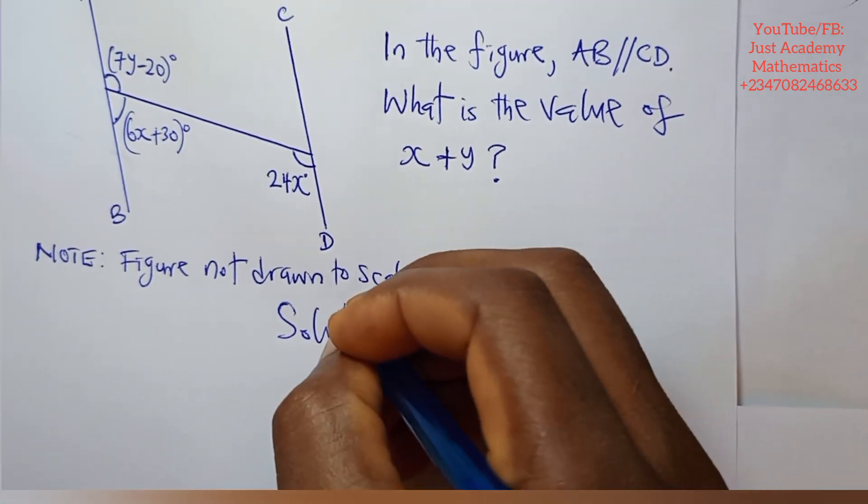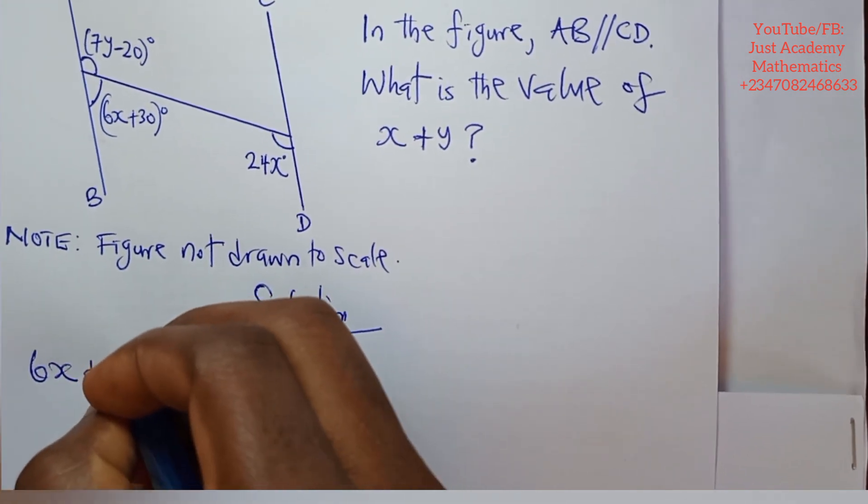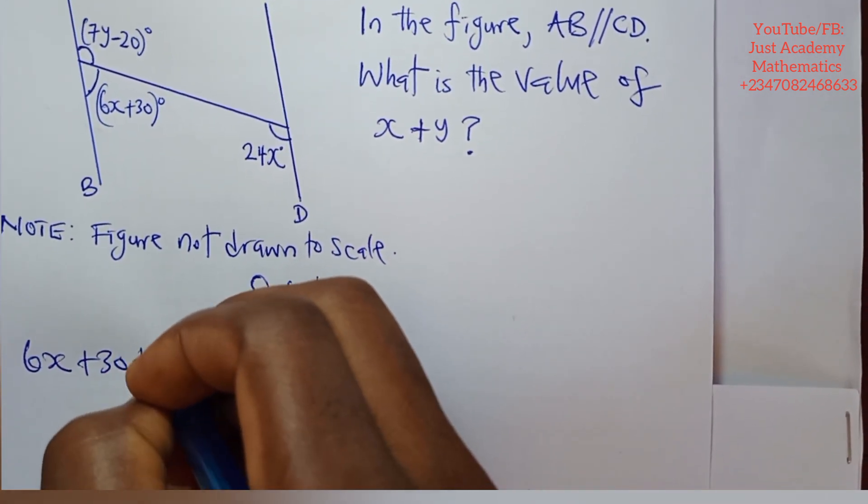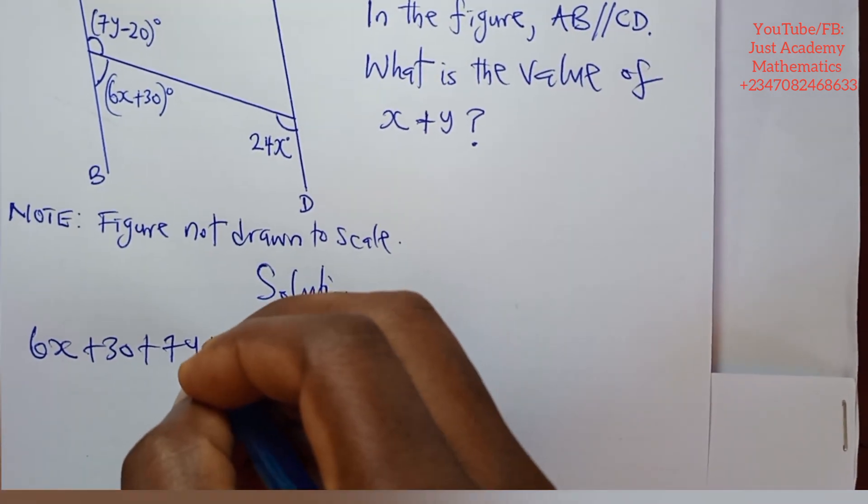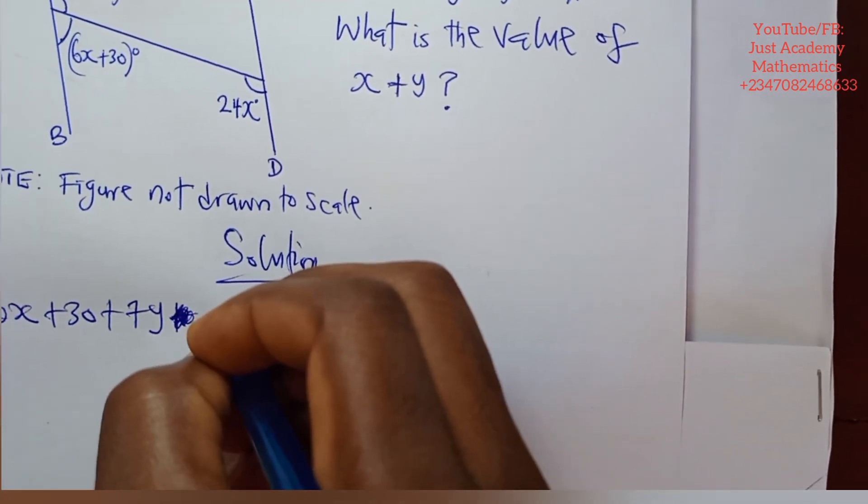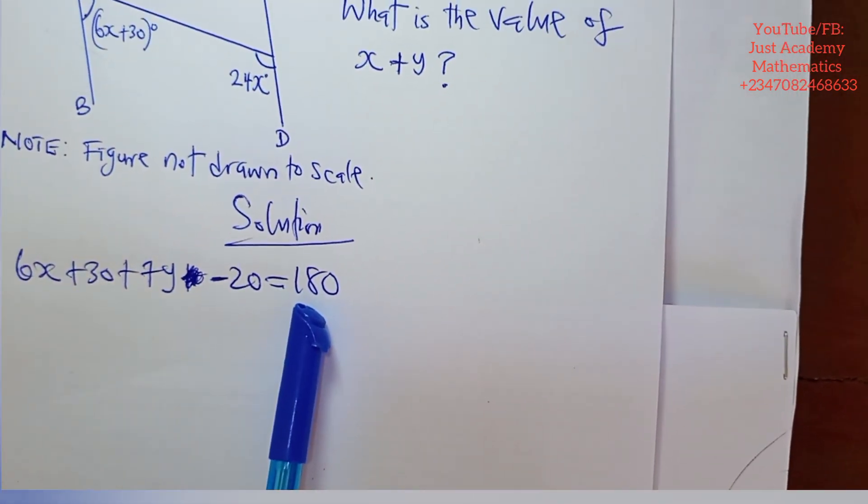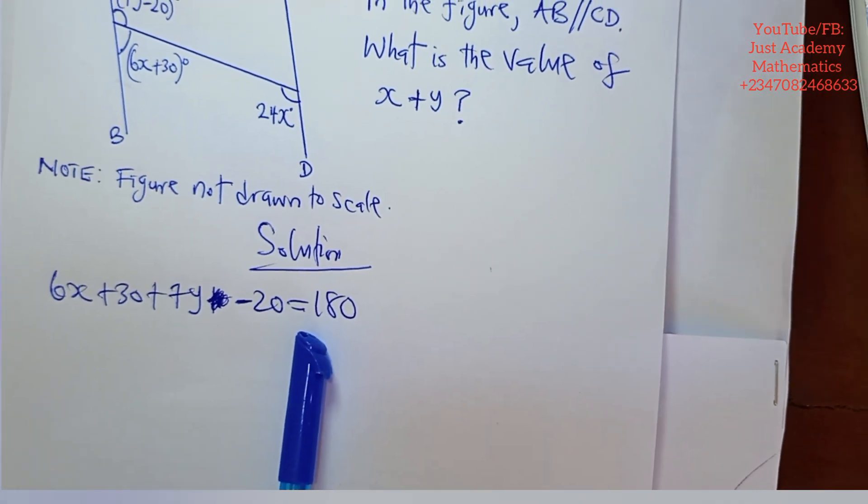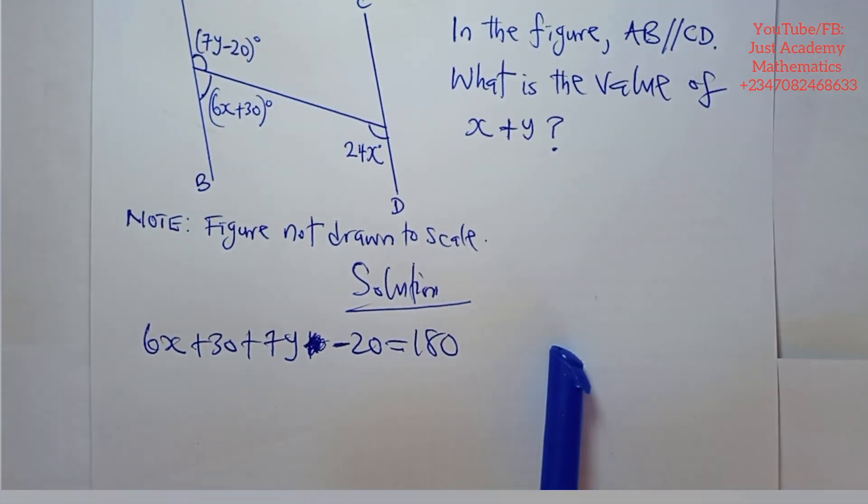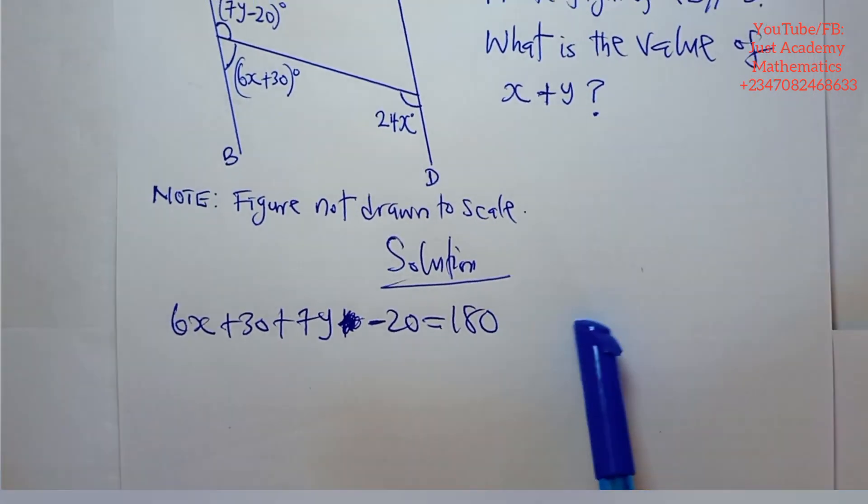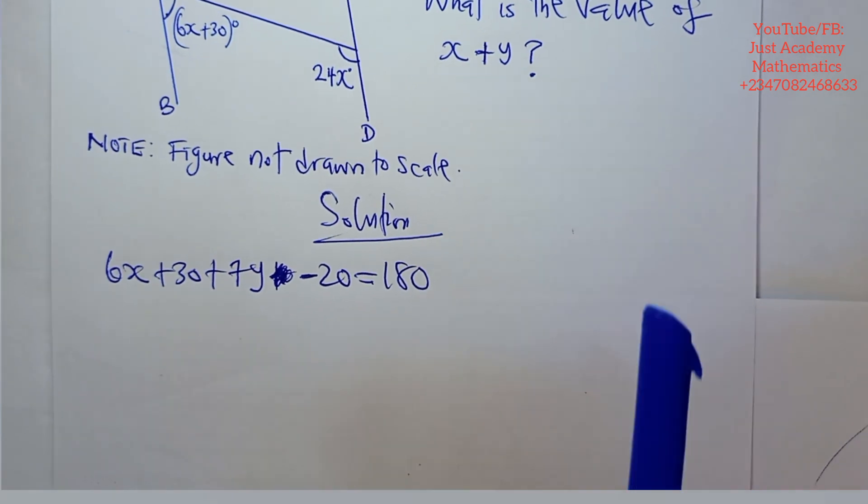Solution. Let's see. So we are saying that 6x plus 30 plus 7y minus 20, not plus, minus 20 is equals to 180 degrees. And what reason is it? It is angle on a straight line. If it is theory, you need to put that in brackets. Sum of angles on a straight line.